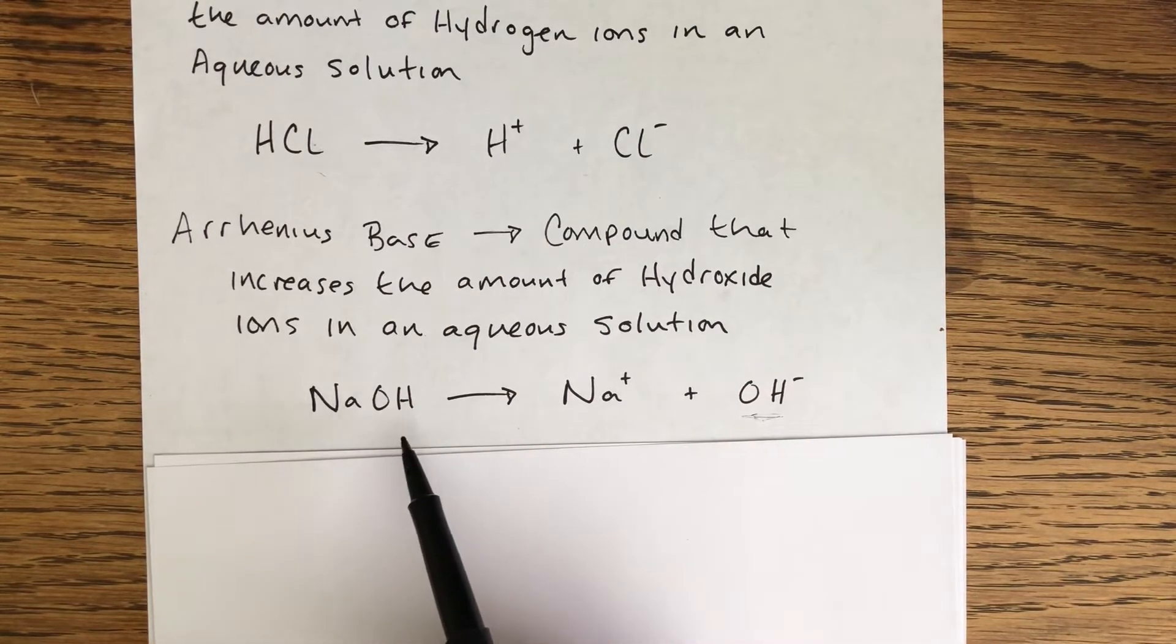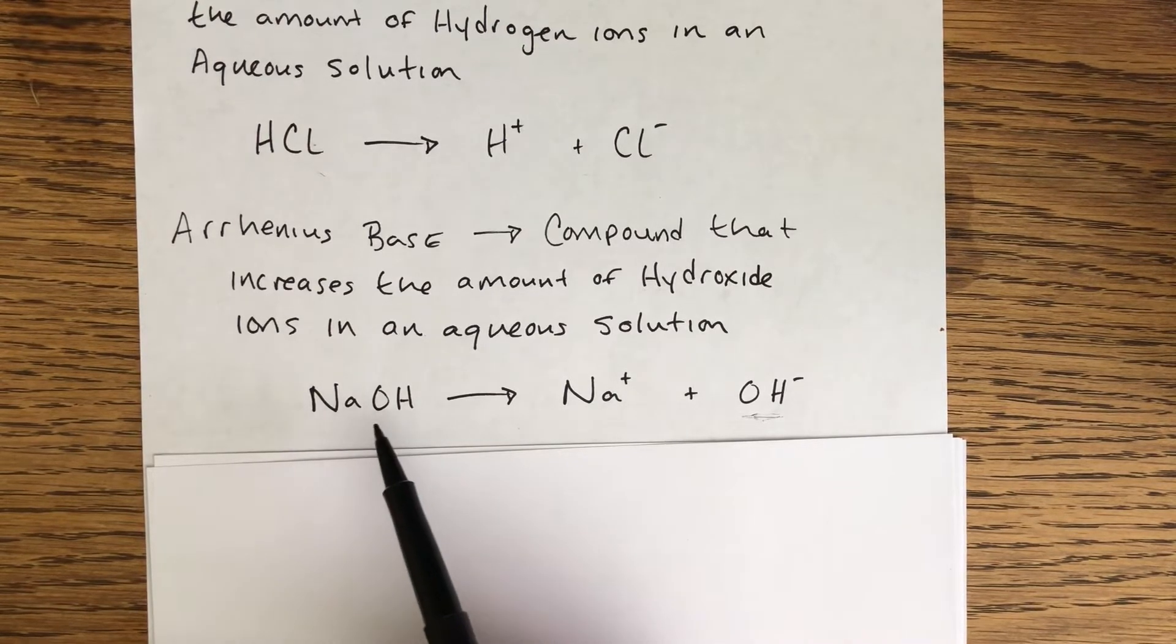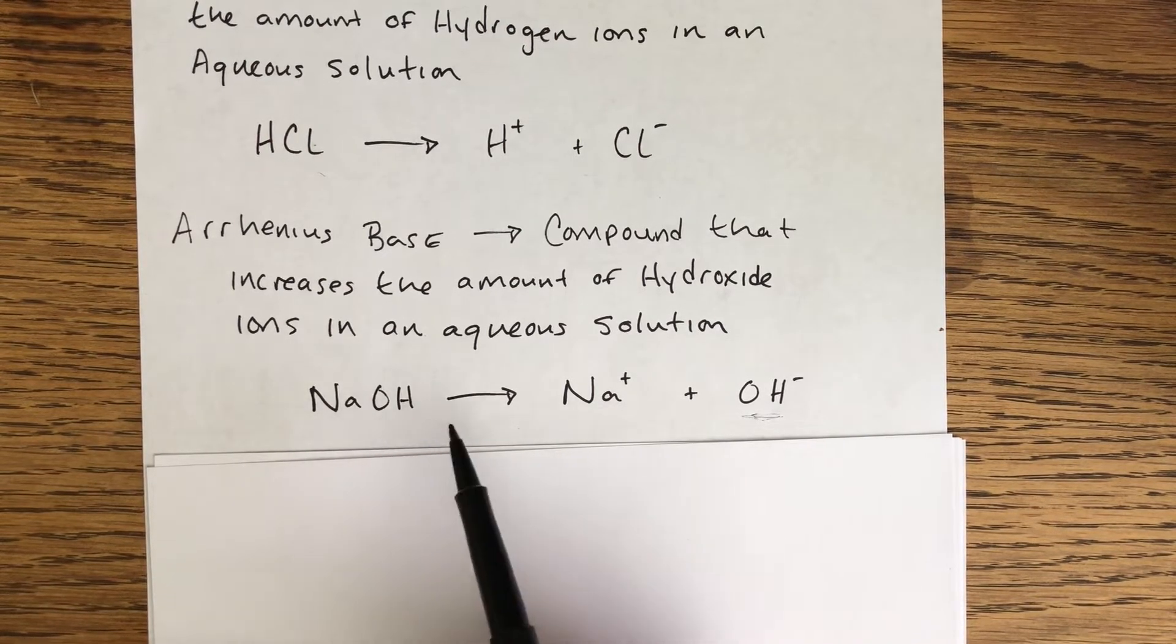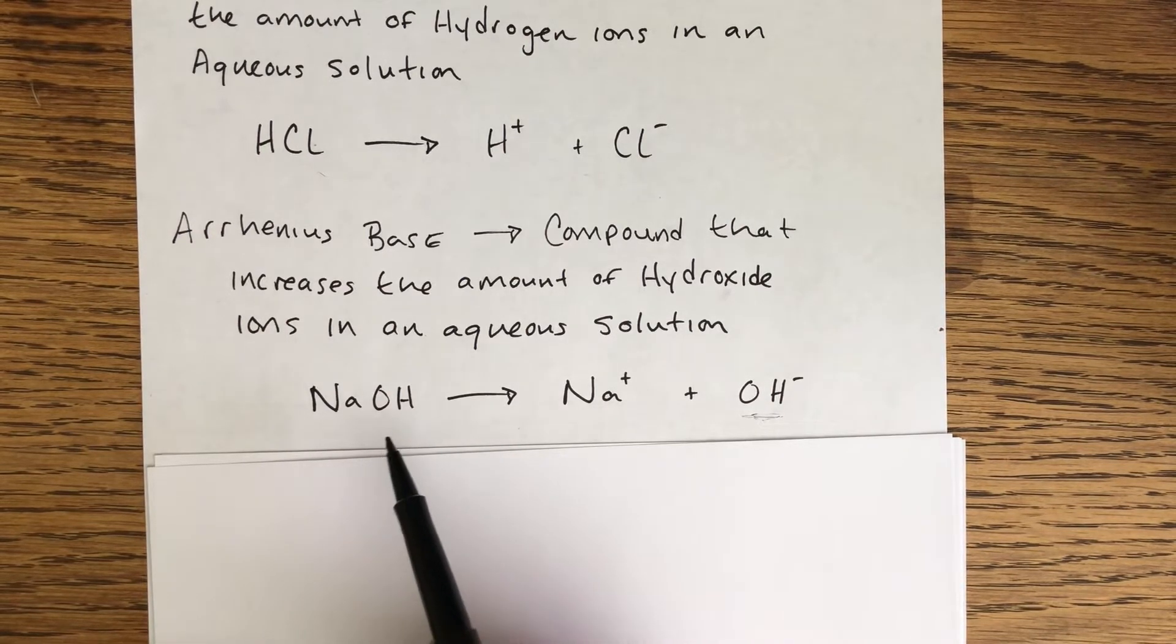A very common Arrhenius base is this one called sodium hydroxide, and this is a solid substance as well. Imagine that we're going to put this into just pure water. Because again, it's an ionic compound, it will dissociate or come apart into its ions.